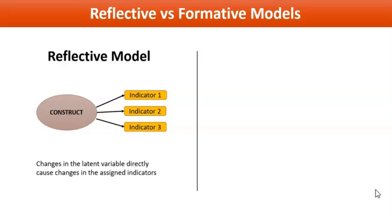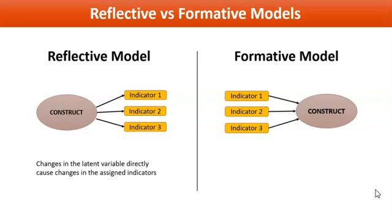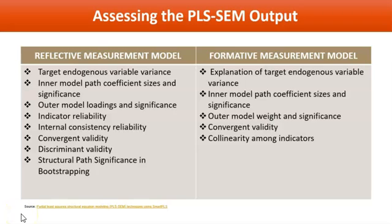Number two is the formative model. If indicators cause the latent variable and are not interchangeable, they are formative. They may be positive or negative or there may be no correlation among them. You will see arrows pointing from indicators to construct. One point needs to be in mind always: you have to see the arrows. If the tail of the arrow is connected with the construct, it is reflective. If the tail of the arrow is connected with the indicator leading towards the construct, it is a formative model.